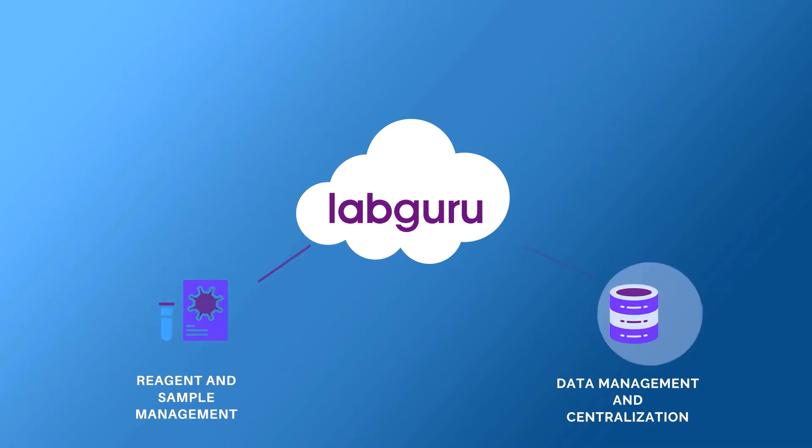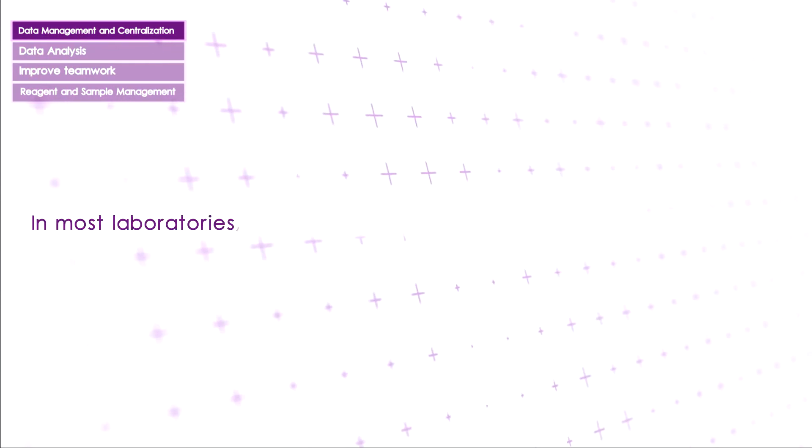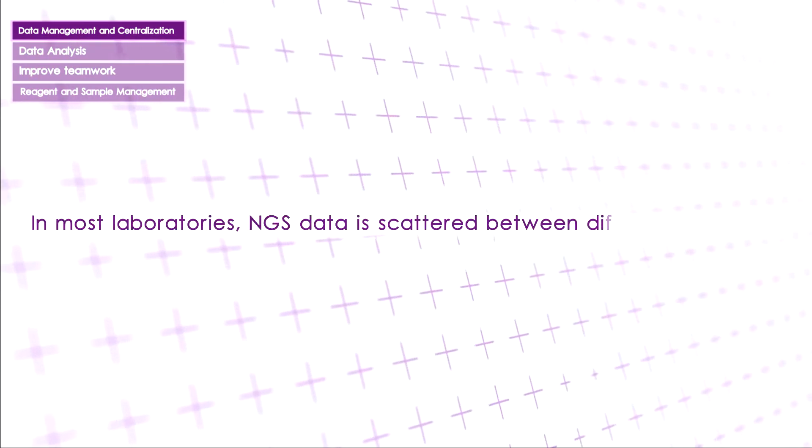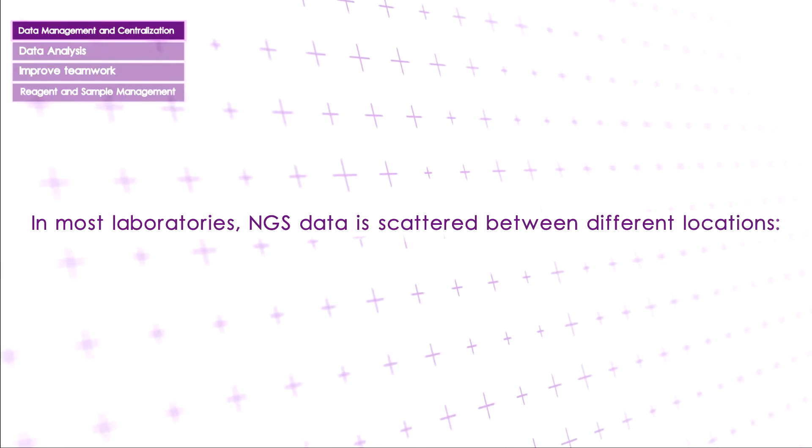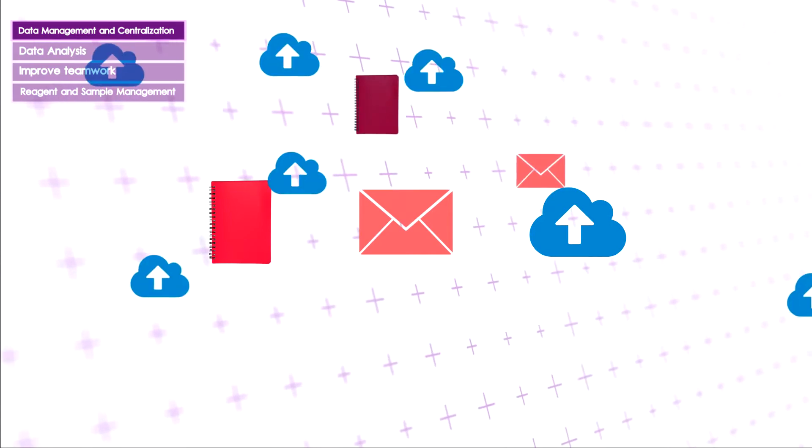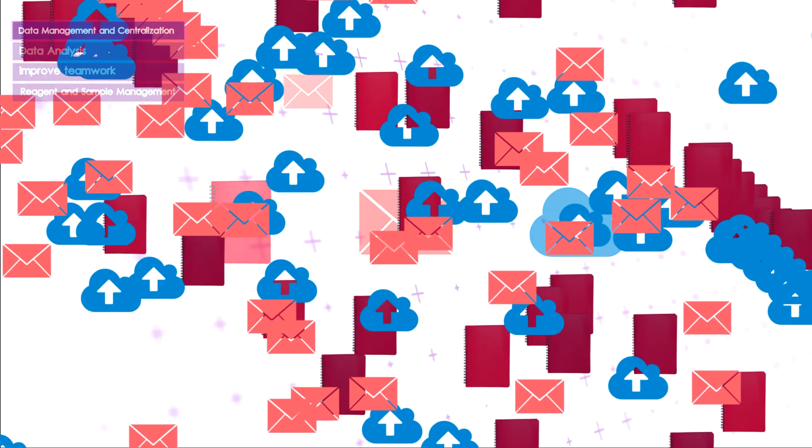Let's start with data management and centralization. In most laboratories, NGS data is scattered between different locations — lab notebooks, emails, cloud storage, and more. Keeping track of all this data, analyzing it, and deriving results can become difficult.